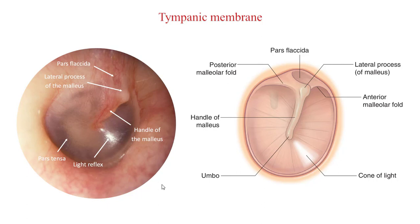If you view a tympanic membrane using an otoscope, you should see the umbo, which is the most distal point of attachment of the inner tympanic membrane to one of the bones of the middle ear, the malleus. The tympanic membrane is particularly taut at this point, and the location inferior and anterior to this is referred to as the cone of light because it reflects the light of the audiologist's otoscope. You may also be able to see the handle of the malleus behind the tympanic membrane appearing as a streak on the membrane.